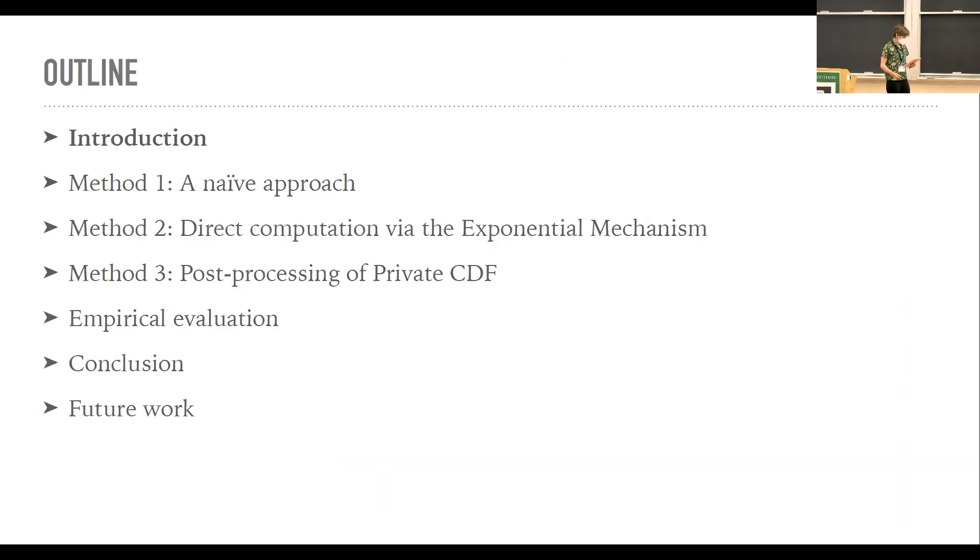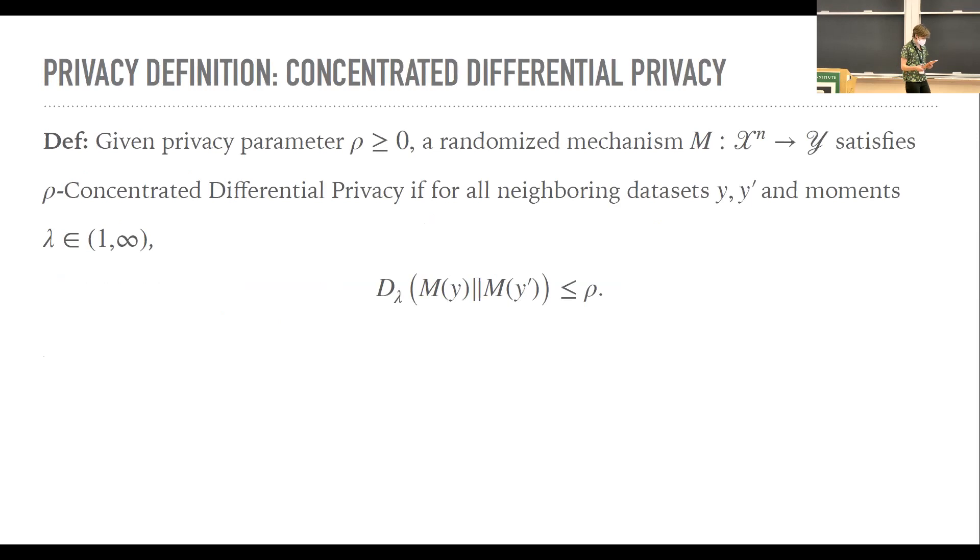Alright, before I get into the weeds throughout this talk, I'll be using concentrated differential privacy as my privacy definition. It doesn't matter a ton, everything holds with epsilon delta differential privacy as well. But if you're not familiar with it, you can just think about it as a notion of privacy that lies between pure and epsilon delta.